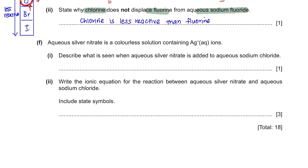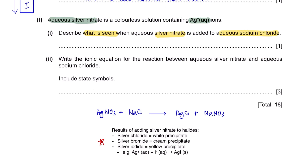Question F Part 1: Describe what is seen when aqueous silver nitrate is added to aqueous sodium chloride. Please remember the results of adding silver nitrate to halides. The halide used here is chloride. When silver nitrate is added to sodium chloride, we get silver chloride, and the color observed is a white precipitate. Make sure you remember this.